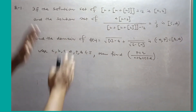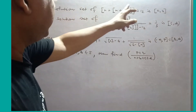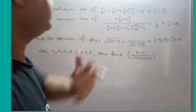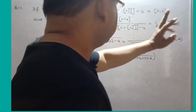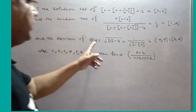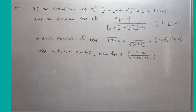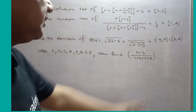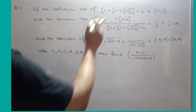Now these questions are fantastic questions — this type of question has possibilities of being asked in JEE Advanced. If the solution set is [A, B] and the solution set of this is clear in 3D, and the domain of f(x) is given, then find B + Q divided by A + B + C + D.